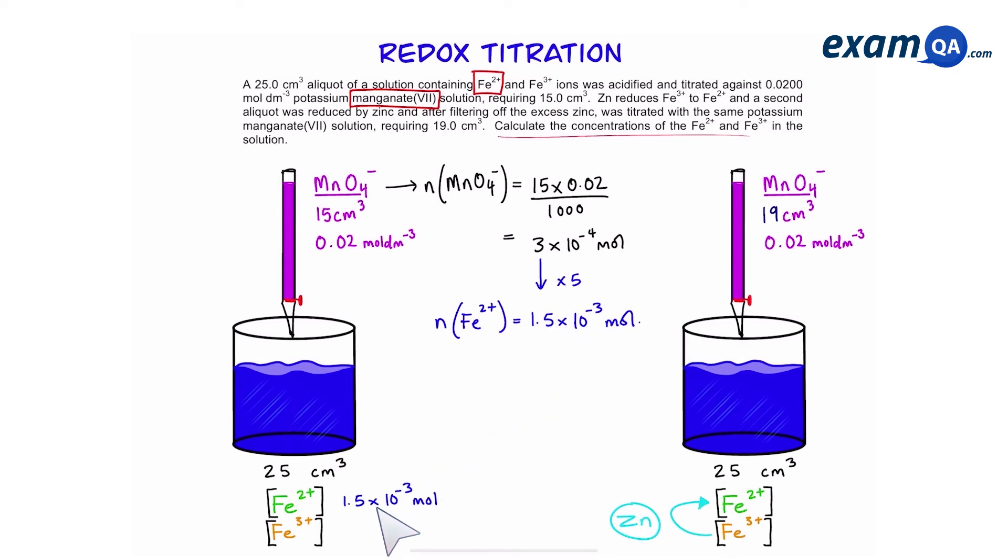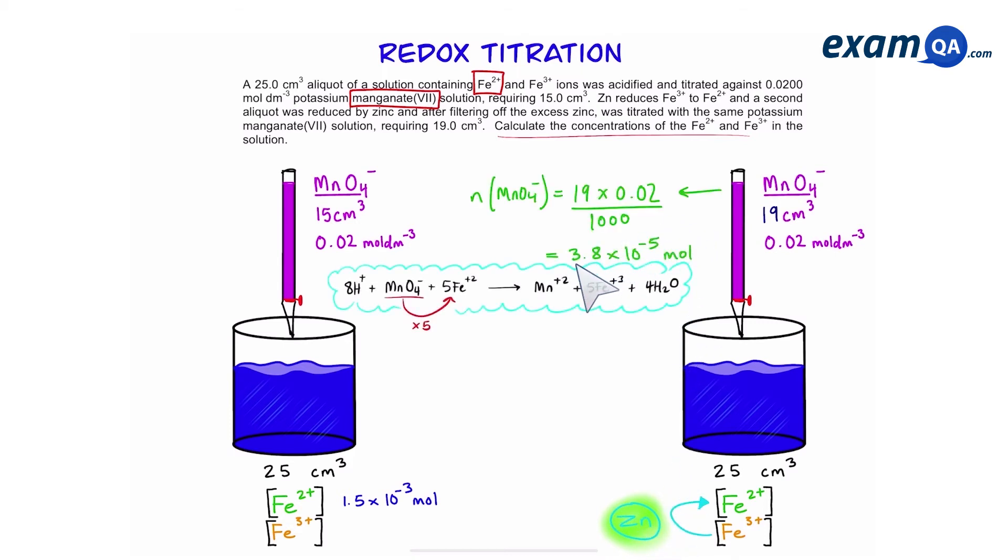Now that we know the moles of iron 2 plus, let's work out the moles of iron 3 plus. Remember, zinc converts 3 plus into 2 plus, so that we can react with manganate. Again, we're going to work out the moles of manganate used. Once we have the moles of manganate, we are then going to times it by 5 again, and we should get the moles of iron 2 plus.